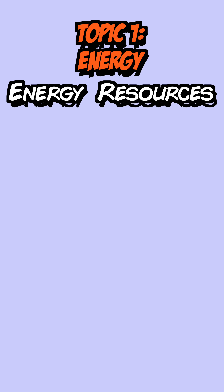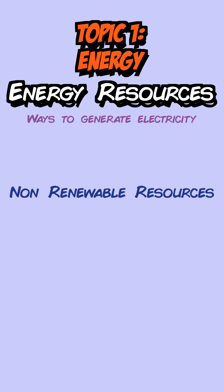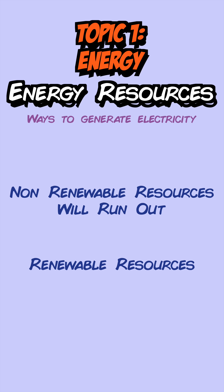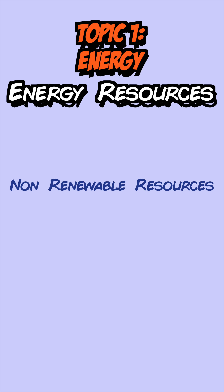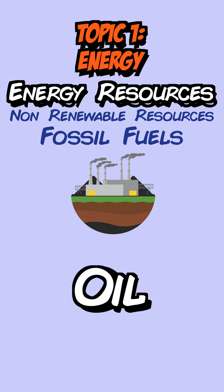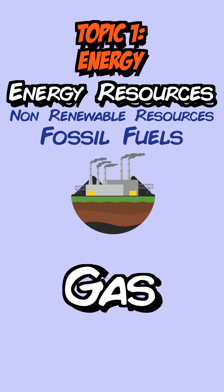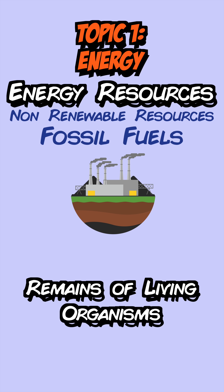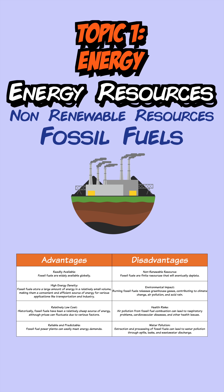Let's move on to energy resources, which is all about ways that we generate electricity. We have non-renewable energy resources, which will eventually run out and cannot be reused, and renewable ones that can be reused. In non-renewable resources, we have fossil fuels, which include coal, oil and gas. They're made from remains of living organisms that died millions of years ago. They produce a lot of energy, but they also produce carbon dioxide, which is a greenhouse gas that can lead to global warming.